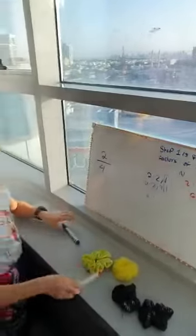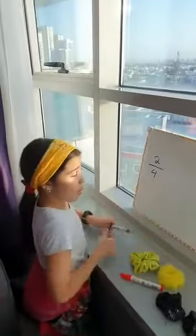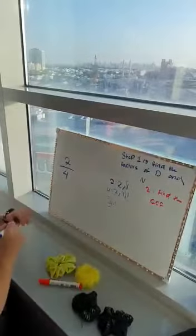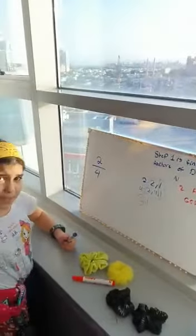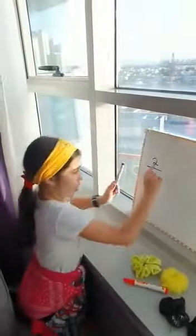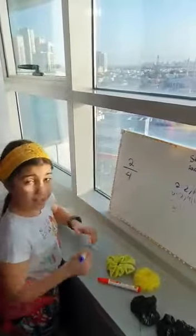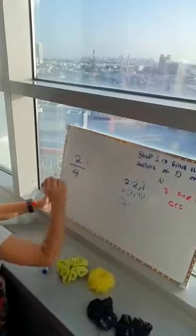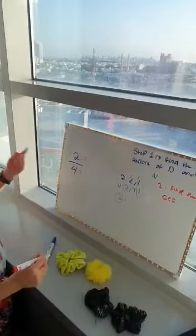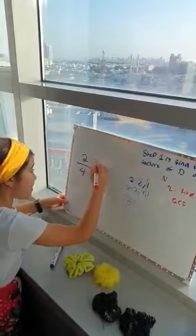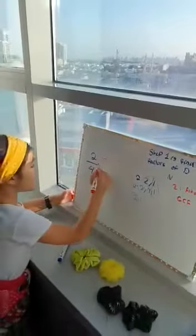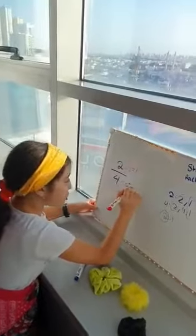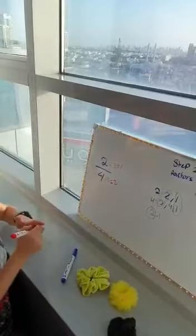Step two means to find the GCF — it means the greatest common factor, the greatest of the common numbers. The greatest one is two. We will divide the numbers we got from the scrunchies by two. Two divided by two equals one, and four divided by two equals two. So the simplified fraction is one over two.